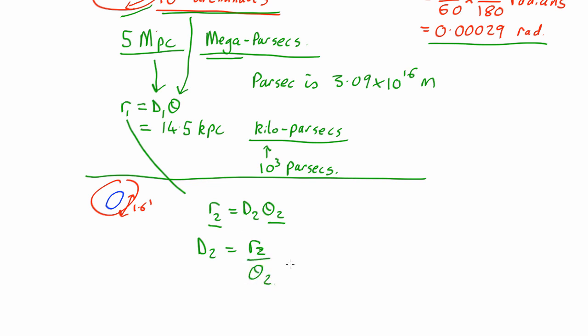We can also do it by ratios. We know that the angle of some galaxy is proportional to 1 over its distance. Therefore, the ratio of the two angles theta 1 over theta 2 will be equal to the ratio of 1 over the distances, which is simply the inverse ratio of distances.